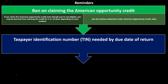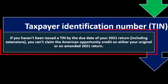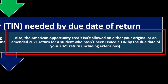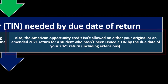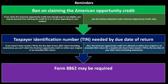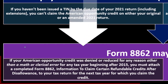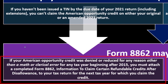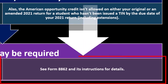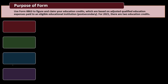Taxpayer identification number (TIN) needed by due date of return: if you haven't been issued a TIN by the due date of your 2021 return, including extensions, you can't claim the American Opportunity Credit on either your original or amended return. Also, the American Opportunity Credit isn't allowed for a student who hasn't been issued a TIN by the due date. Form 8862 may be required if your American Opportunity Credit was denied or reduced for any reason other than a math or clerical error for any tax year beginning after 2015. See Form 8862 and its instructions on irs.gov.